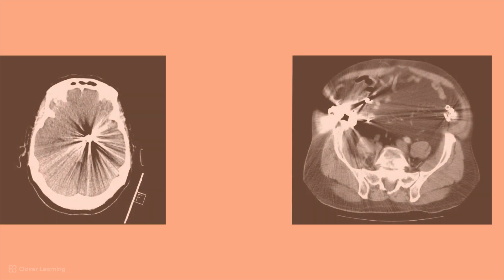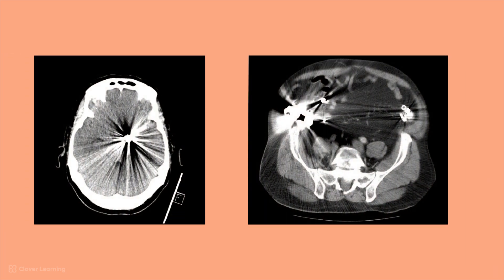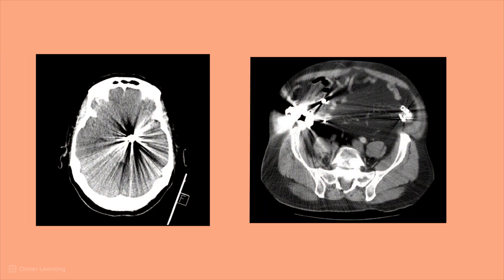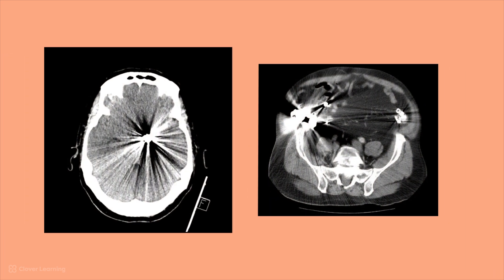There are other ways beam hardening artifact can appear on a CT image. The image on the left shows a patient with a cerebral aneurysm clip. These clips are often made of metal, and as a result of that very dense material inside the brain, it resulted in streaking and beam hardening artifact inside the brain.